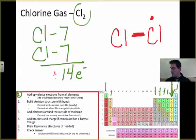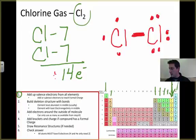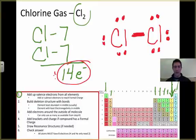Three, four, five, six, seven, eight, nine, ten, eleven, twelve, thirteen, and fourteen. Now I've used all 14 to build my structure. Then step four: add brackets if there's a formal charge. Again, there's no formal charge, so we don't have to worry about that.